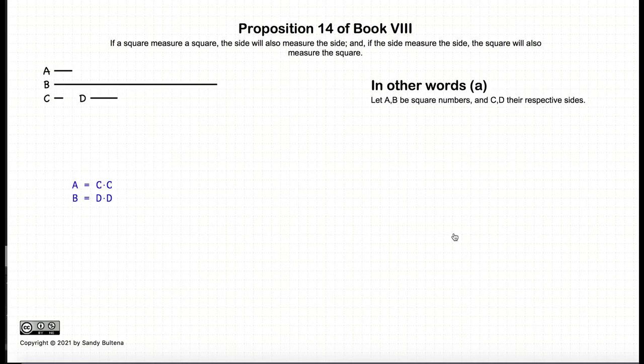This video presentation is going to be on Proposition 14 of Book 8. Now in this proposition, we start with two numbers, A and B, which are square, and have sides C and D respectively.